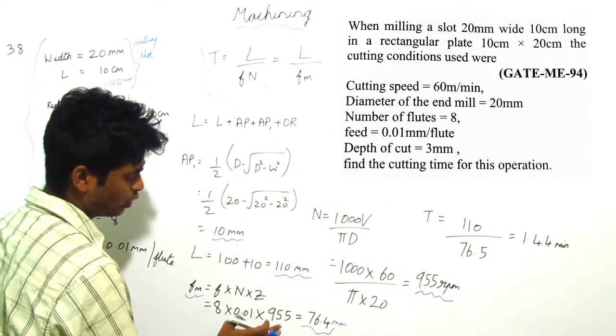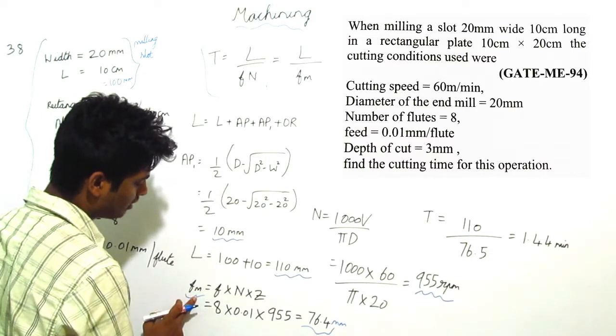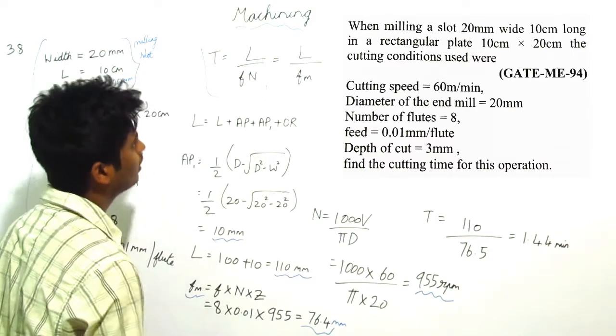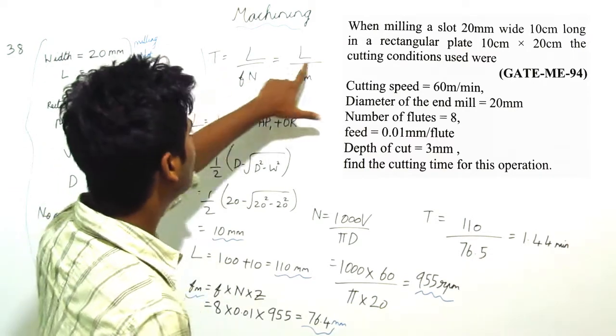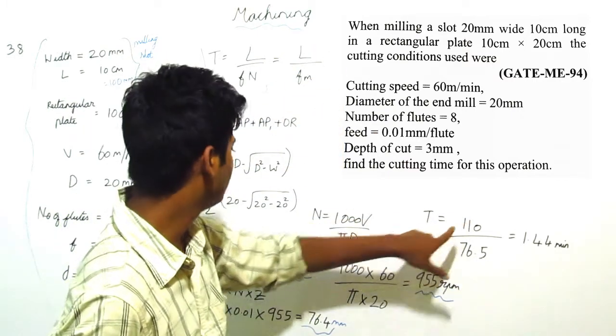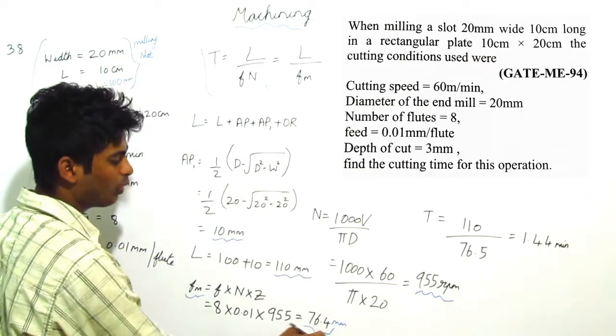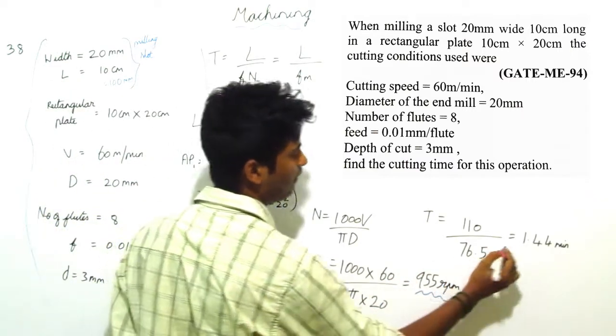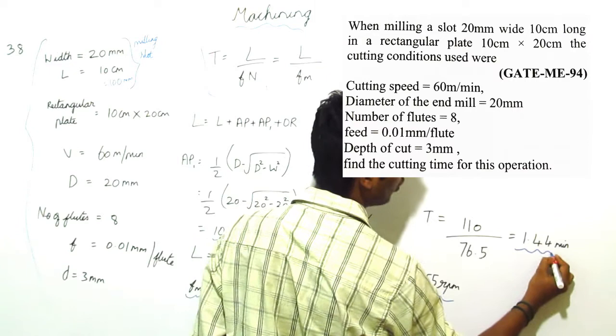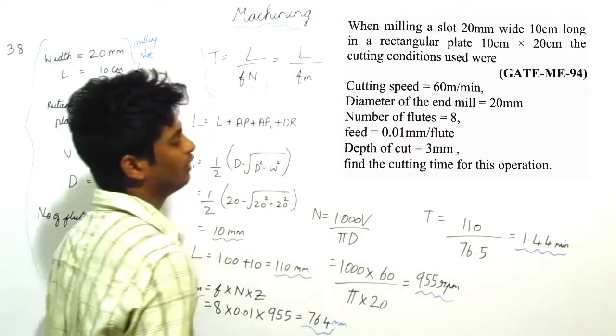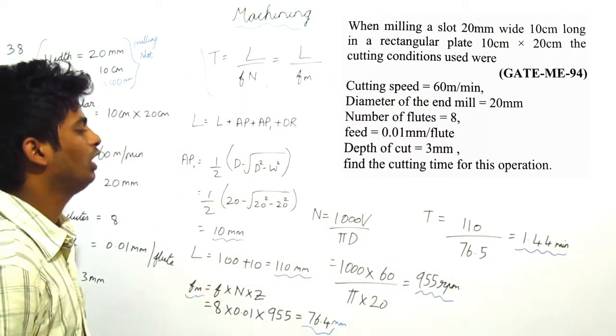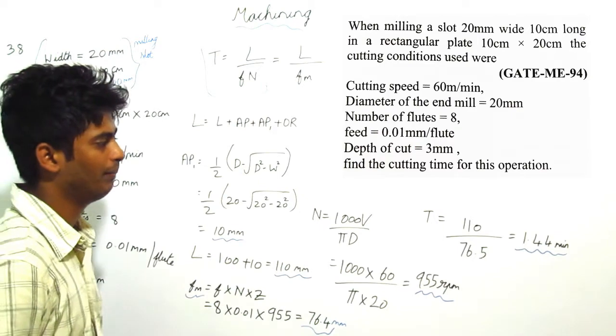This RPM value is substituted here for getting this Fm value. So T is equal to L. L is total length, that is 110 mm, by Fm. Fm is 76.4. Finally we are getting 1.44 minutes. Total time taken for this milling operation is 1.44 minutes.